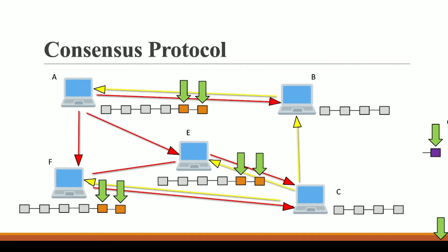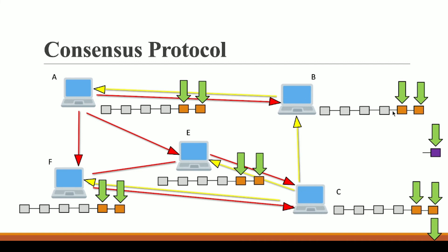The blocks you are seeing discarded are called orphan blocks — or discarded blocks. Once these blocks are discarded, B and C will add the orange blocks from the A, E, F network to their blockchain so that consistency among all nodes in the blockchain network can be maintained. The transactions in the orphan blocks will again be added to the mempool so miners can process them in the next mining round. Always remember: the longest chain wins.